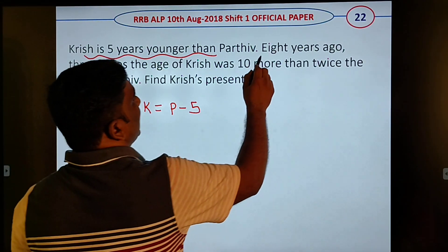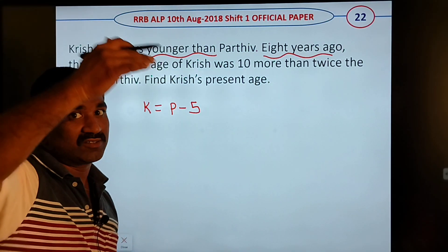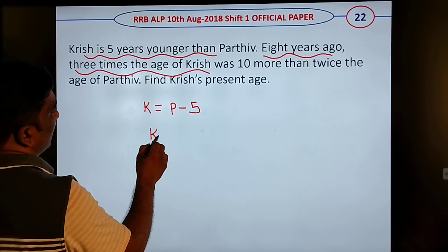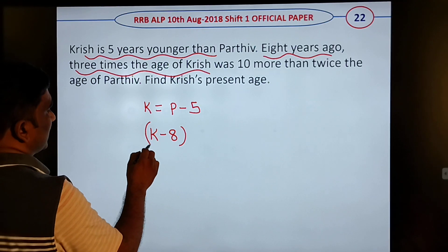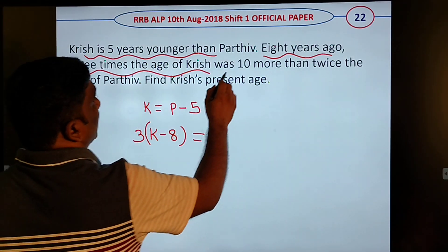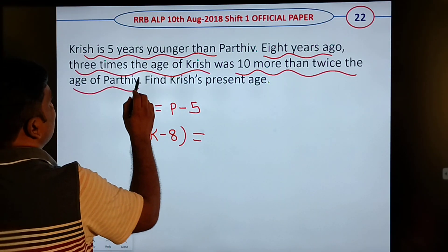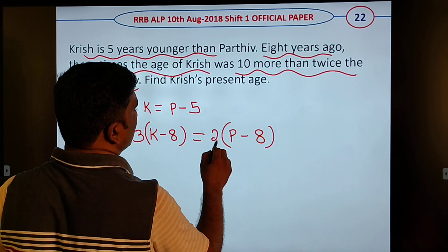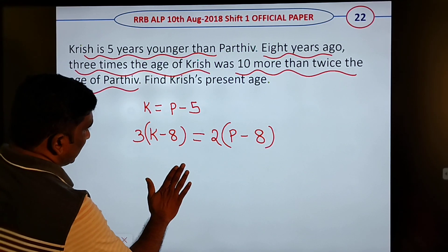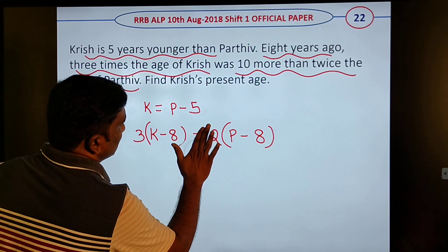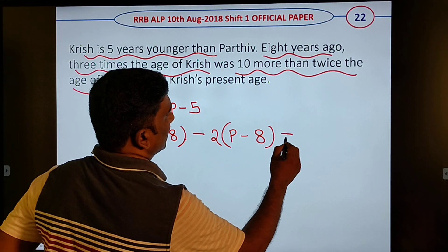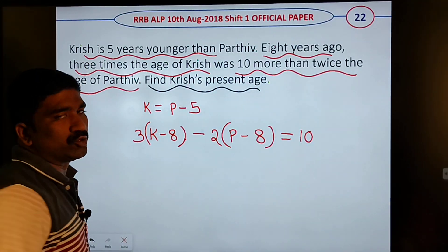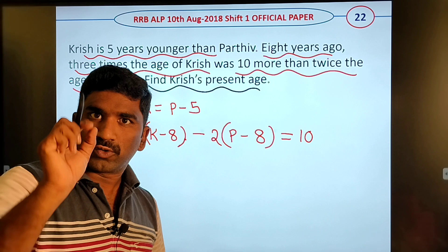80 years ago — 90 years ago. Three times the age of Chris. Chris, 90 years ago, that's 3 times the age of Chris — 10 years more than the 20th age of Chris. How many years ago? The first time — two times. The present age — the last question.